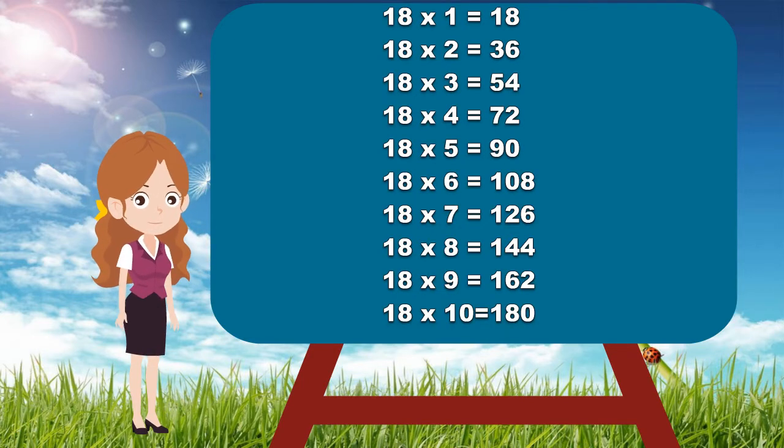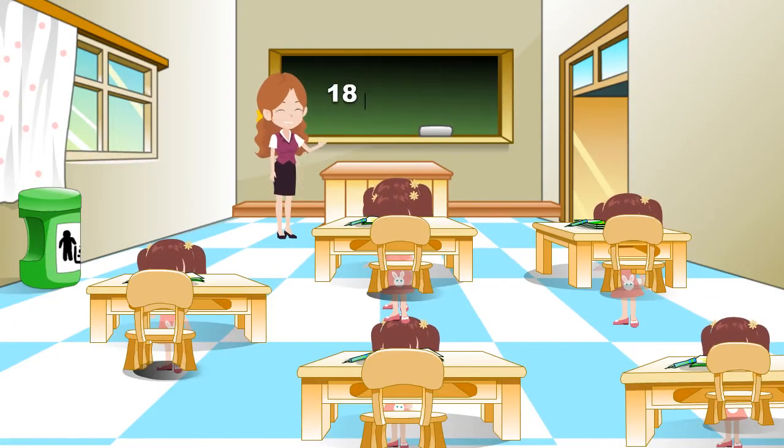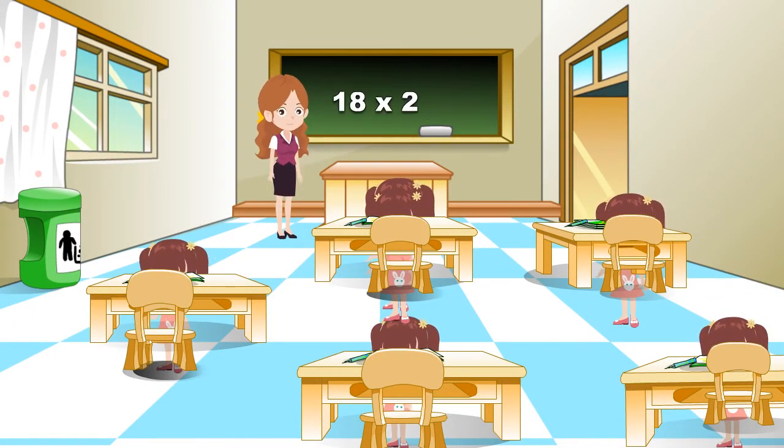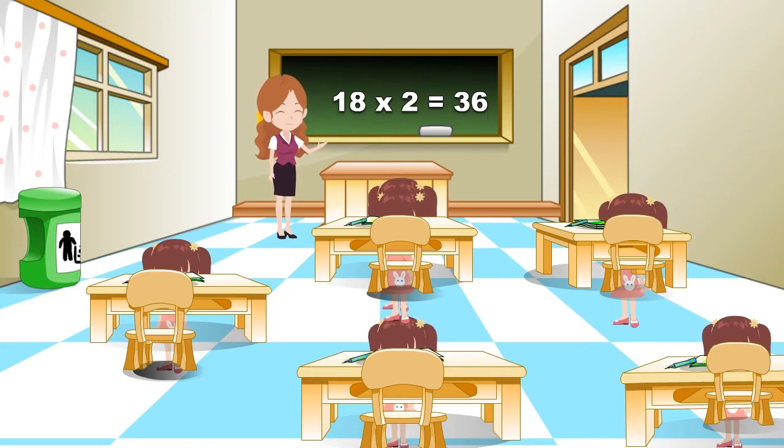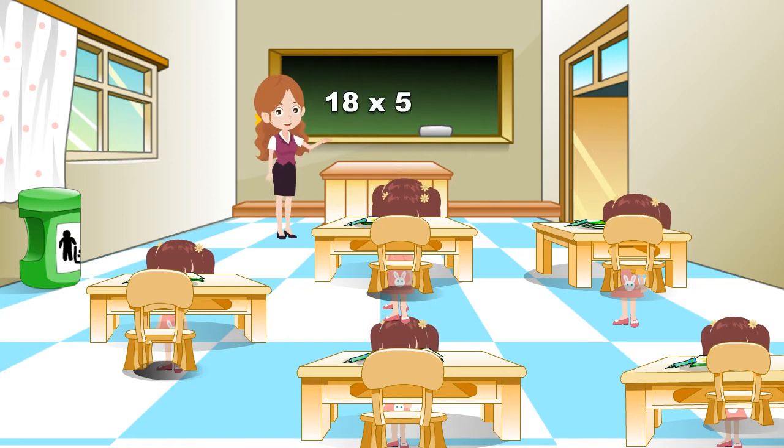Now children, repeat this table with me. 18 times 1 is 18. 18 times 2 is 36. 18 times 3 is 54. 18 times 4 is 72. 18 times 5 is 90.